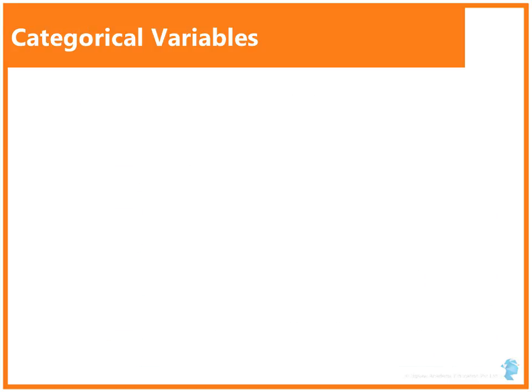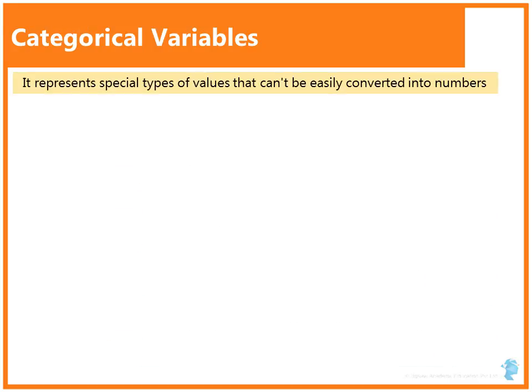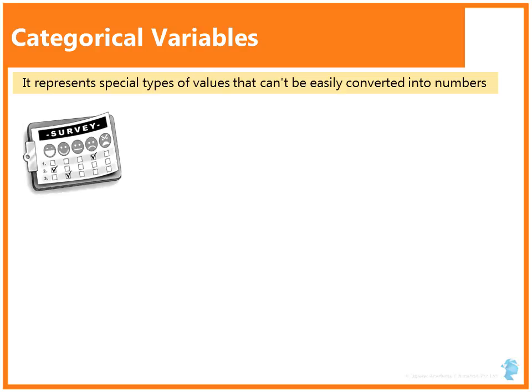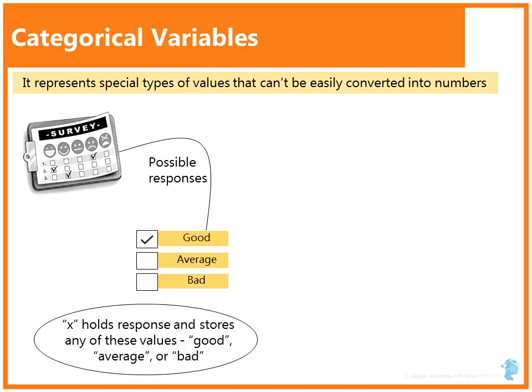What is a categorical variable? Categorical variable represents special types of values that can't be easily converted into numbers. Suppose you are doing a customer survey. For a particular question, the possible responses for this question are good, average and bad. If a variable say x holds response for this question, that is, it can store any of these values, good, average or bad, then x becomes the categorical variable.